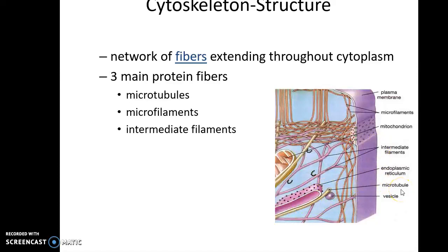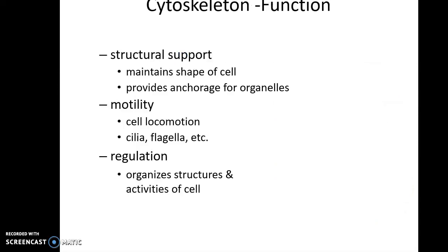What is the basic function of a cytoskeleton? The cytoskeleton has three functions: providing structural support, facilitating motility, and regulation. With respect to support, it helps in maintaining the shape of the cell and provides anchorage for cell organelles. It facilitates cell locomotion and is found in cilia and flagella, which are locomotory organs. It also helps in organizing the structures and activities of the cell, thereby aiding in regulation.